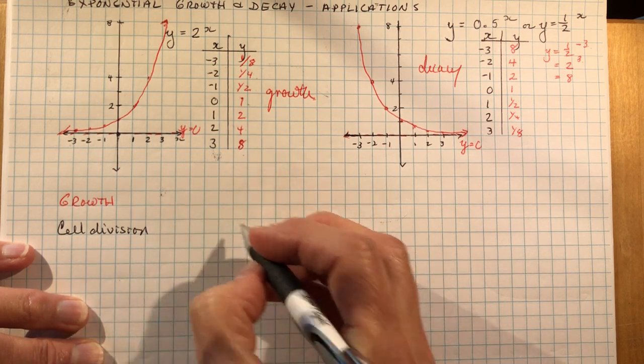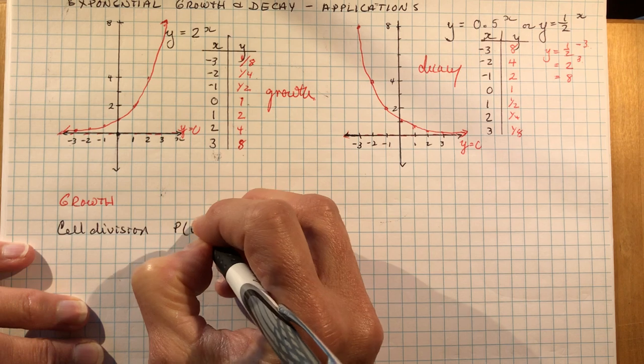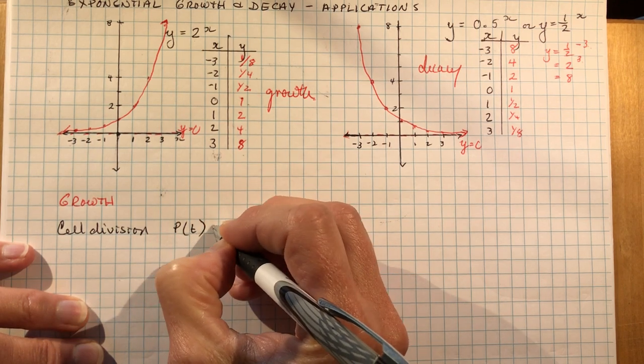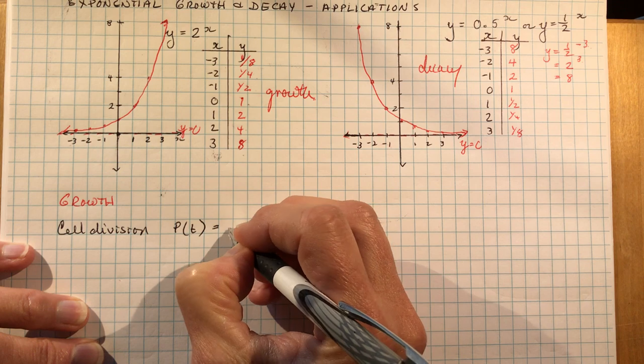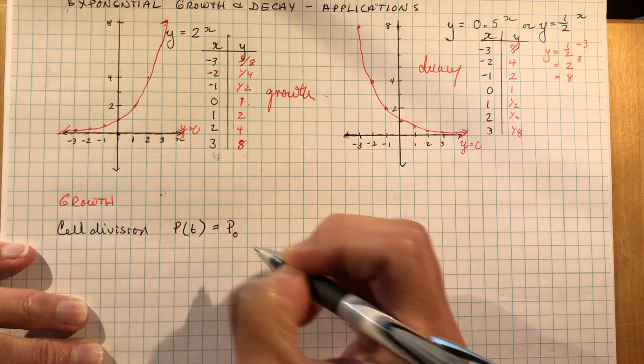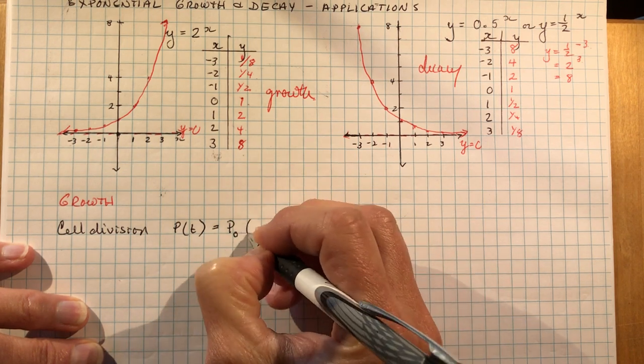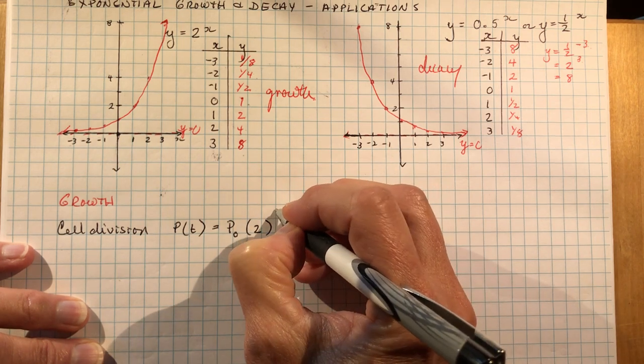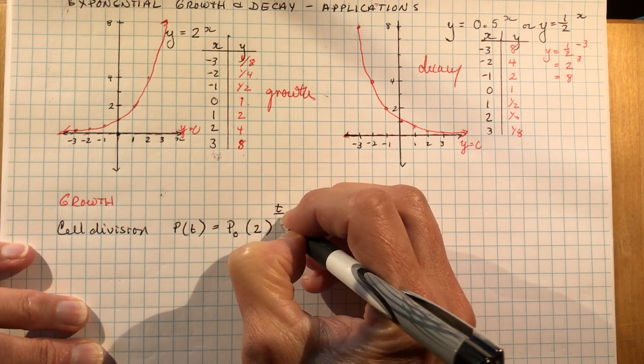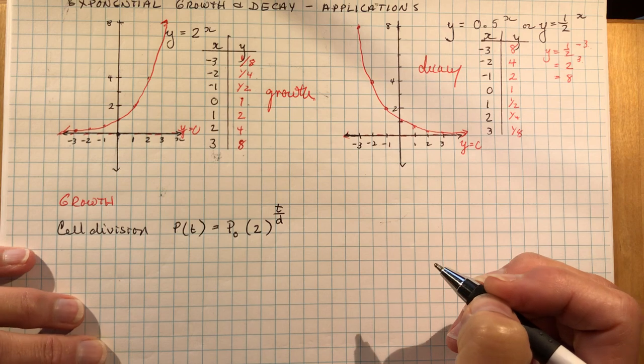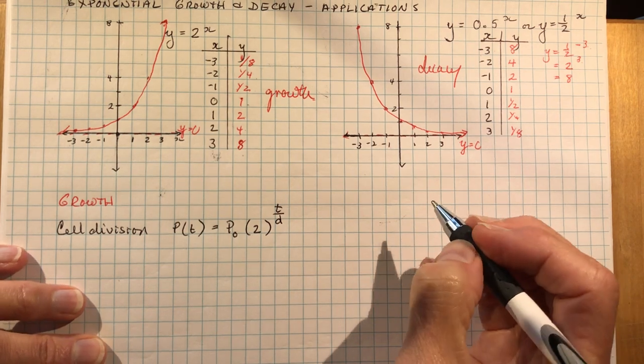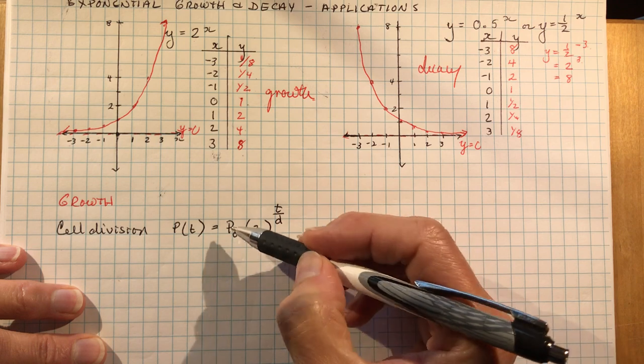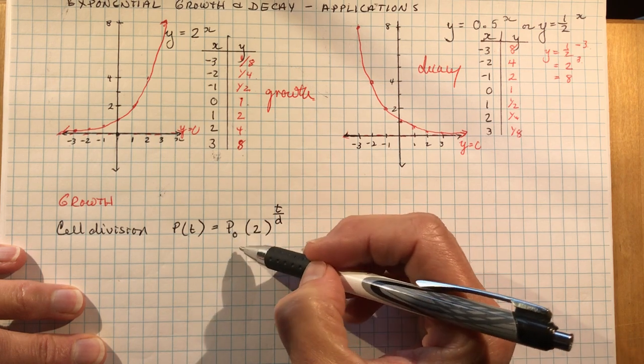And the equation looks like this. You have a population at some time t. Remember, this is like a function notation. Is the initial population, P₀, times 2. And this is where this one has a fraction for an exponent. And I'll explain that very quickly here now.